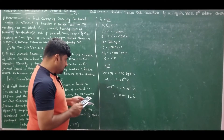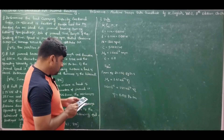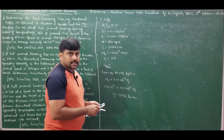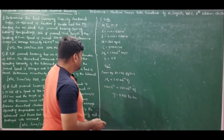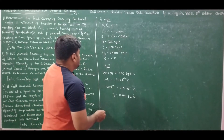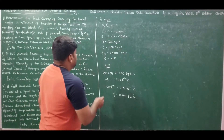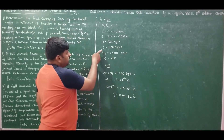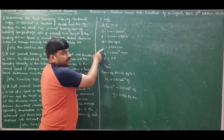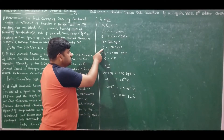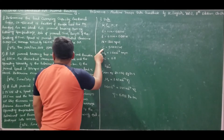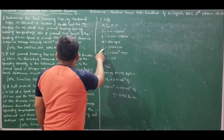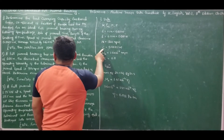Solving, we get eta = 0.011 Pascal seconds. Now we know the radial clearance is 0.0025 centimeters.